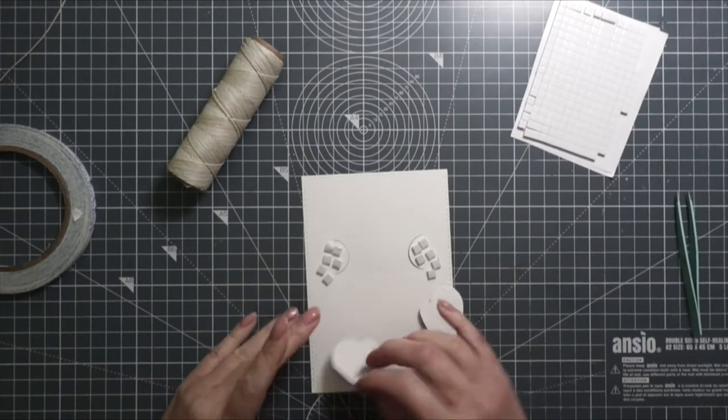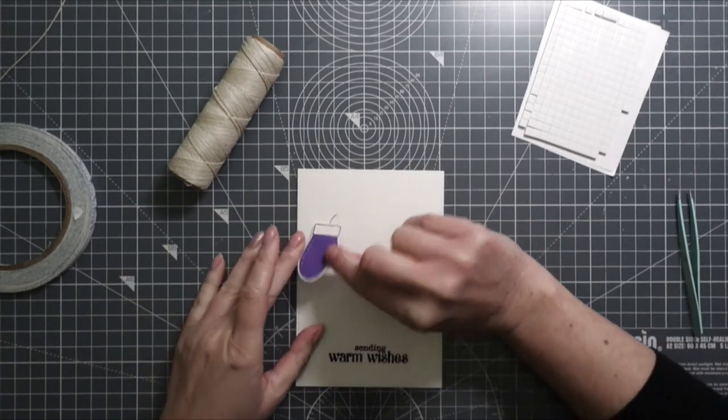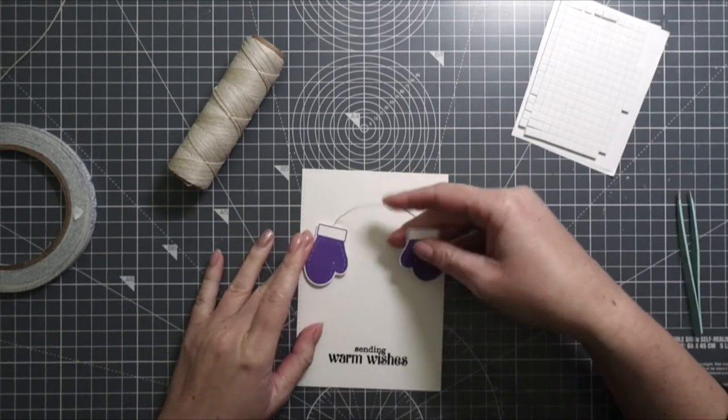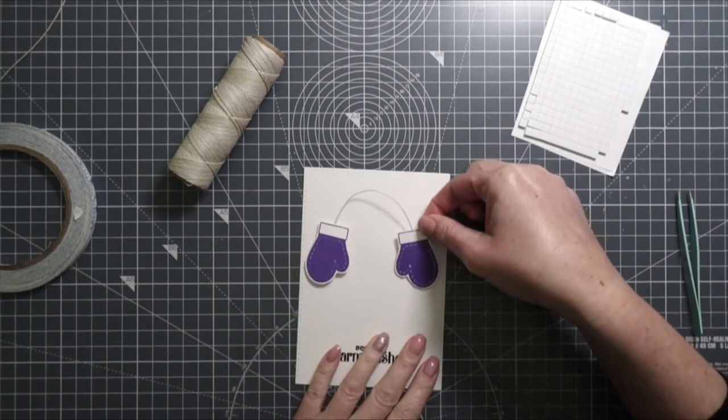Then I adhered the mittens on top of the slits using little foam squares. Usually I add foam adhesive on the back of die cut images, but in this case it was easier to add the foam squares on top of the slits instead of the back of the mittens.